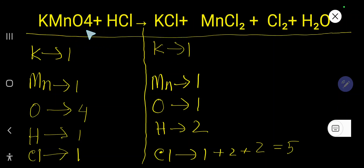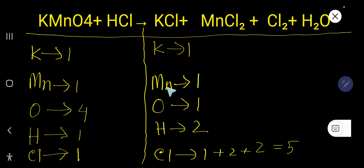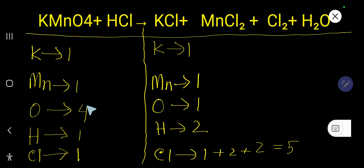How to balance this reaction: KMnO₄ plus HCl → KCl plus MnCl₂ plus Cl₂ plus H₂O. We'll try to balance the atom first that is present in only one compound. Chlorine is present in three compounds — one here, two here, two here — basically five total. So we'll balance chlorine last.